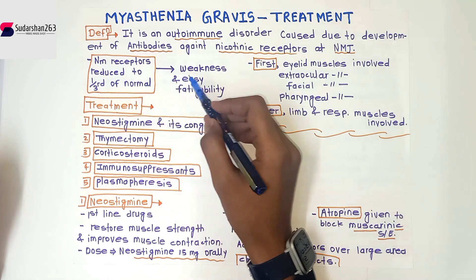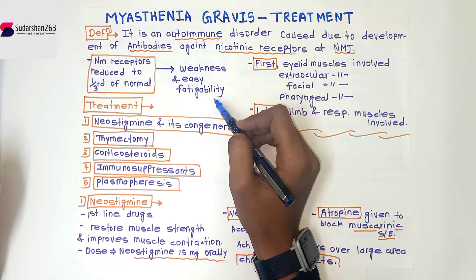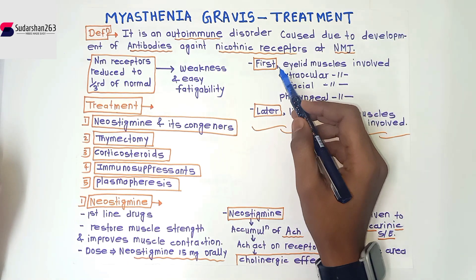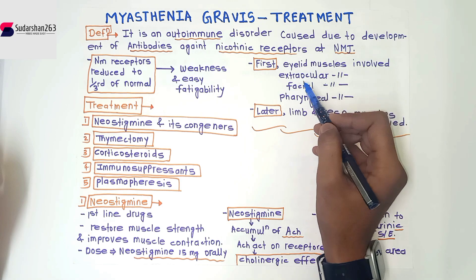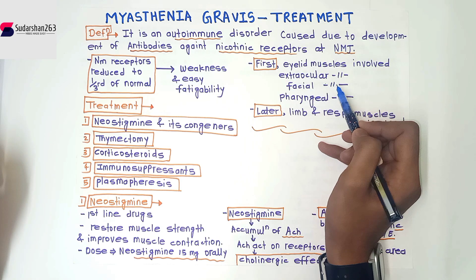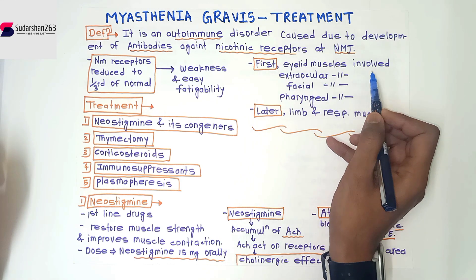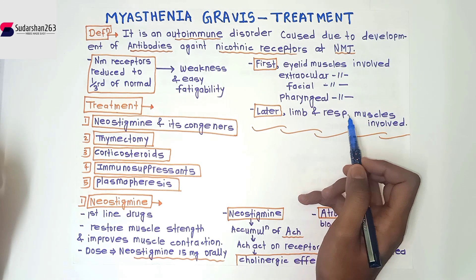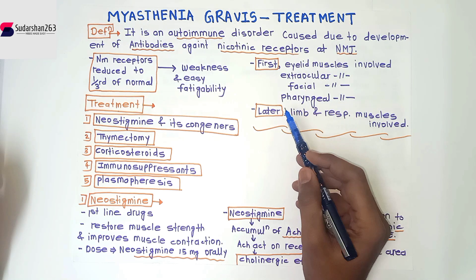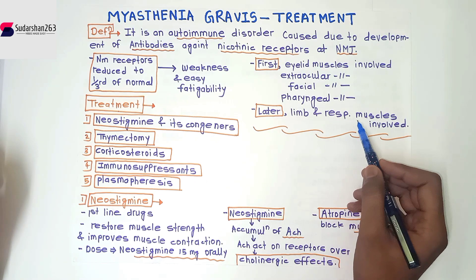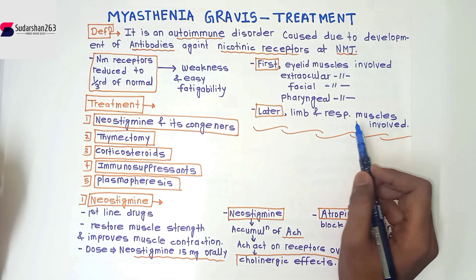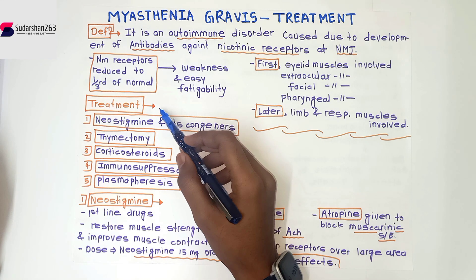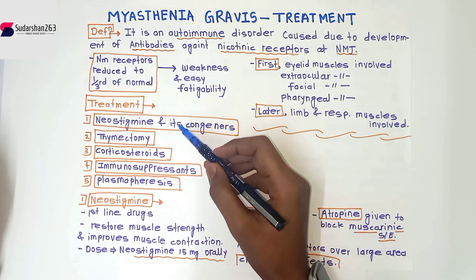In myasthenia gravis, NMJ receptors are reduced to one third of normal, which causes weakness and easy fatigability of the muscles. Muscles involved include: eyelid muscles, extraocular muscles, facial muscles, and pharyngeal muscles first. Later, limb muscles and respiratory muscles are involved. Death may also occur due to respiratory muscle paralysis.